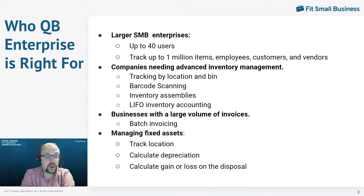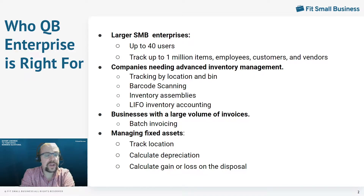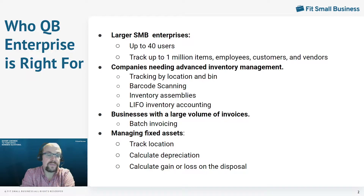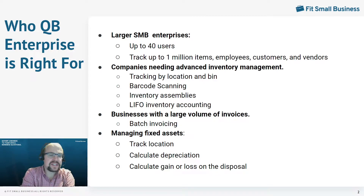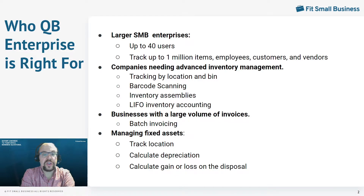You can use barcode scanners with QuickBooks Enterprise for quick data entry. You can do inventory assemblies, which is essentially taking pre-existing inventory, assembling them together, adding labor, and automatically calculating the cost of this new assembled inventory — consider it very light manufacturing. Finally, QuickBooks Enterprise can use LIFO inventory accounting, which is last in, first out. Most small business accounting software only uses the average cost method, but QuickBooks Enterprise can use average cost or you can switch to LIFO.